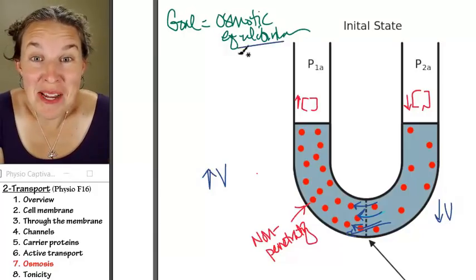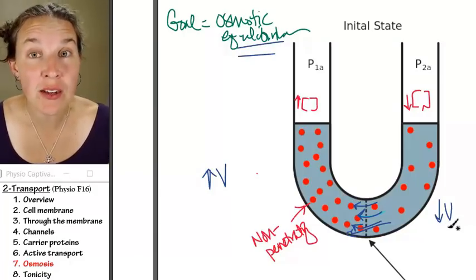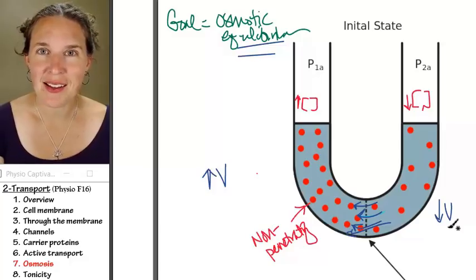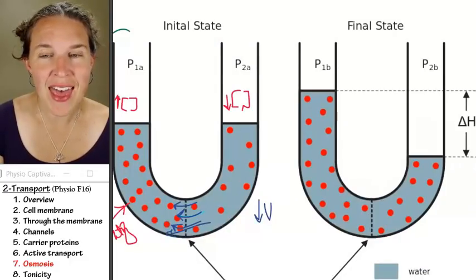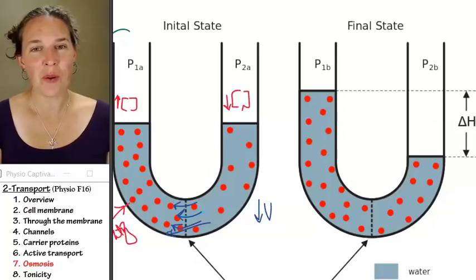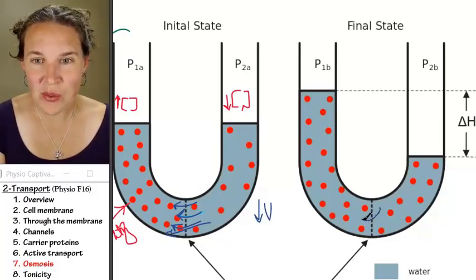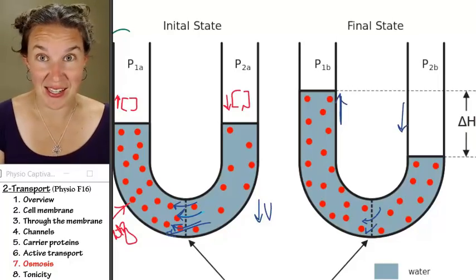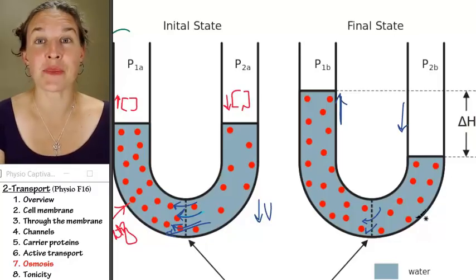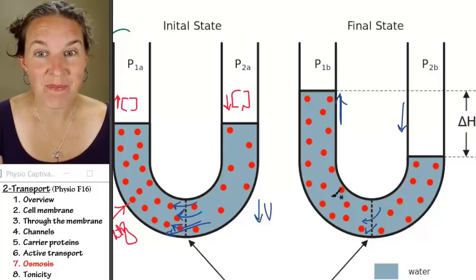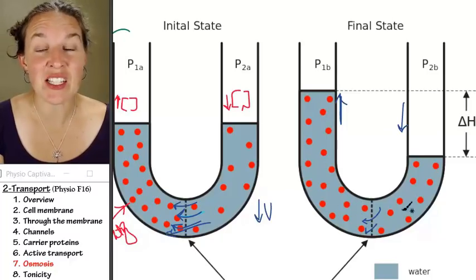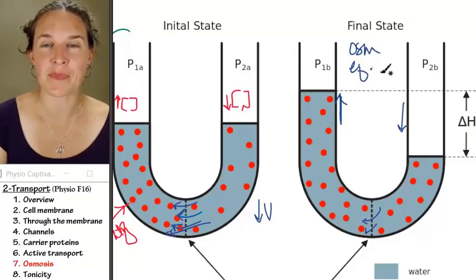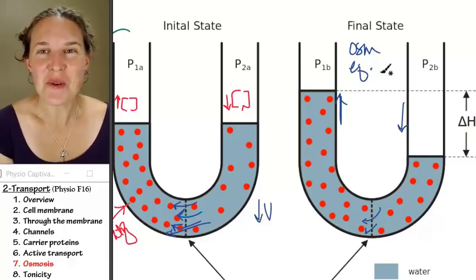Water is going to move. If water moves from this side, we'd be decreasing the volume on this side and increasing the volume on this side. How long are we going to let water move? Until osmotic equilibrium is reached, until the concentrations, the osmolarities on both sides are the same. The water moved. The water level actually increased on this side, decreased on this side, and now we have less volume for the number of particles, more volume for the number of particles, and the concentrations are equal. We are now in osmotic equilibrium.